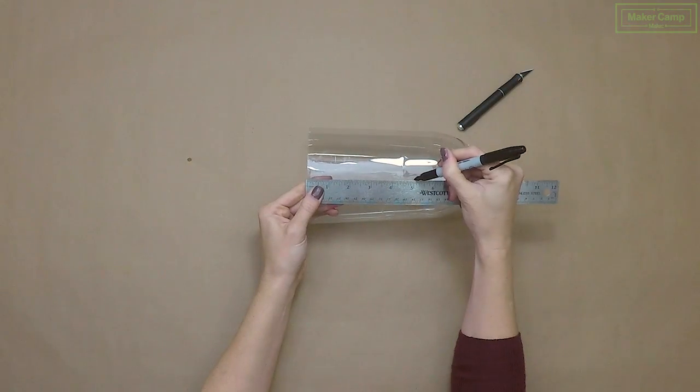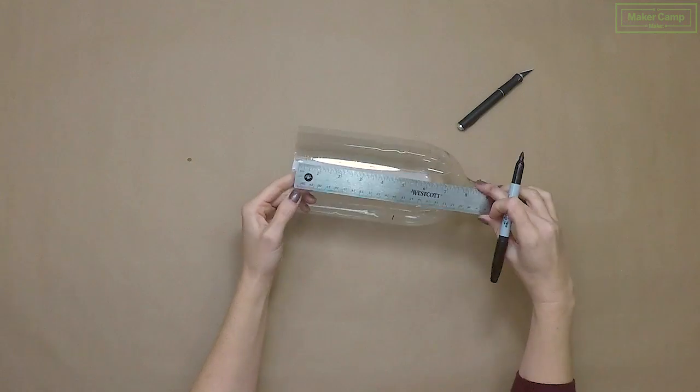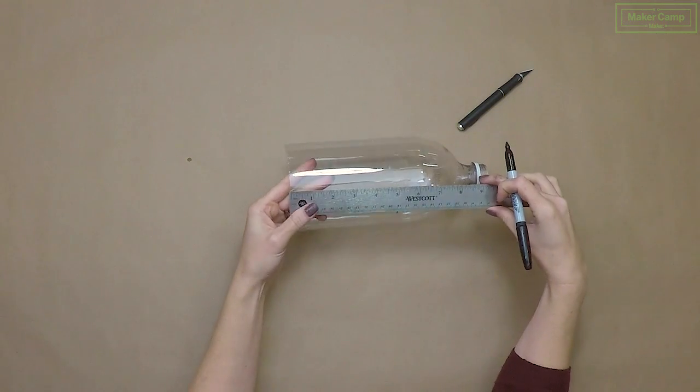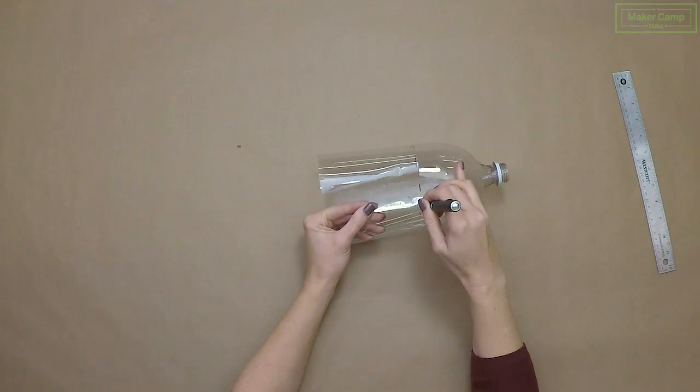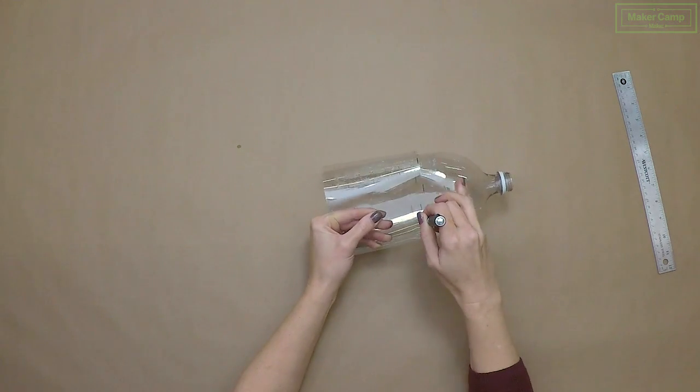Next, measure 5 inches up all the way around from the straight edge you just cut. This will give you a 5-inch tall cylinder.